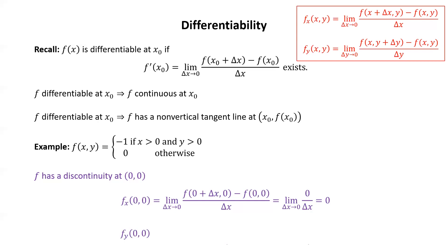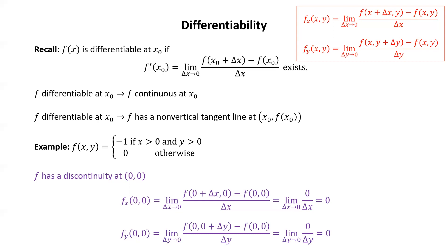Similarly, if we look at the partial of f with respect to y at (0, 0), that's the limit as delta y goes to 0 of f of (0, 0 plus delta y) minus f of (0, 0) over delta y. Both terms in the numerator have x coordinate 0, so both terms are 0, the numerator becomes 0, and that limit is just 0. So both partial derivatives exist at (0, 0) and they're both equal to 0, yet the function has a discontinuity at (0, 0).